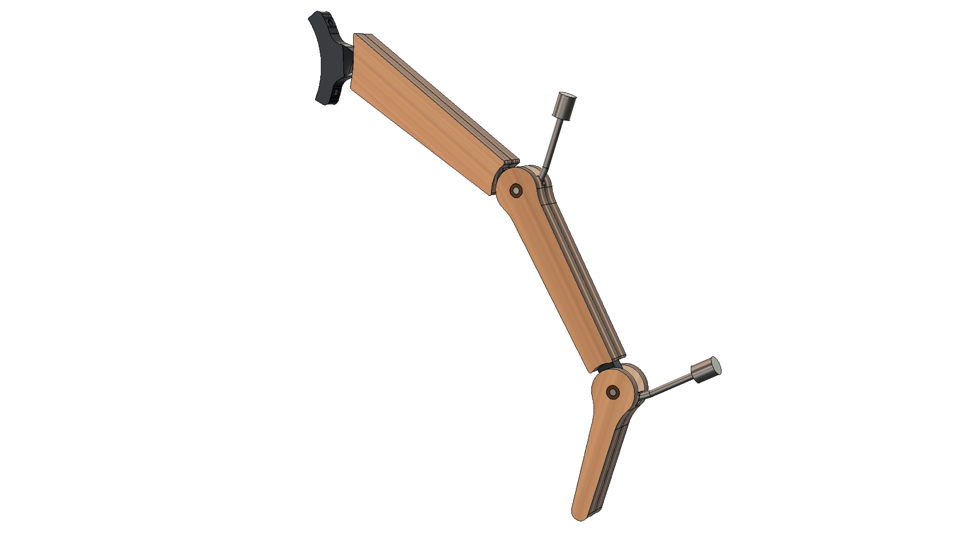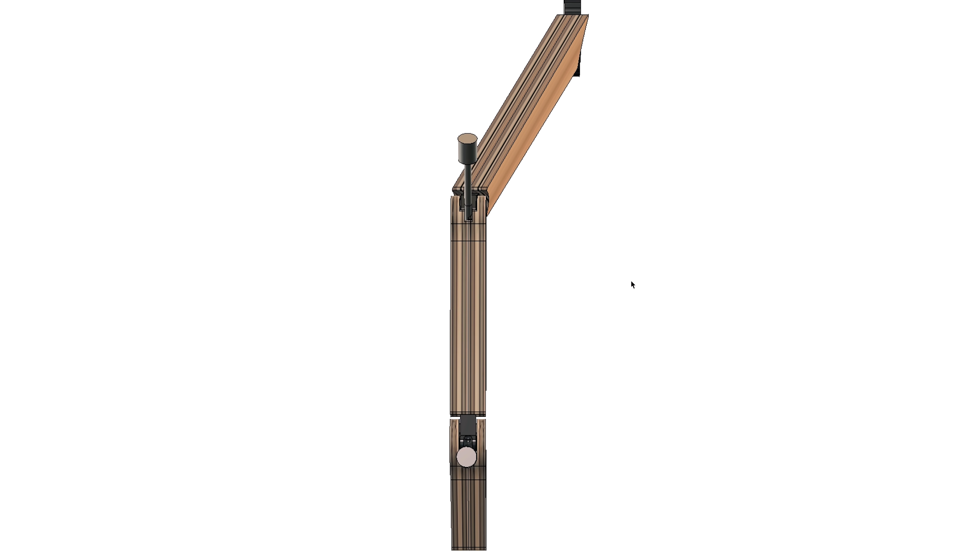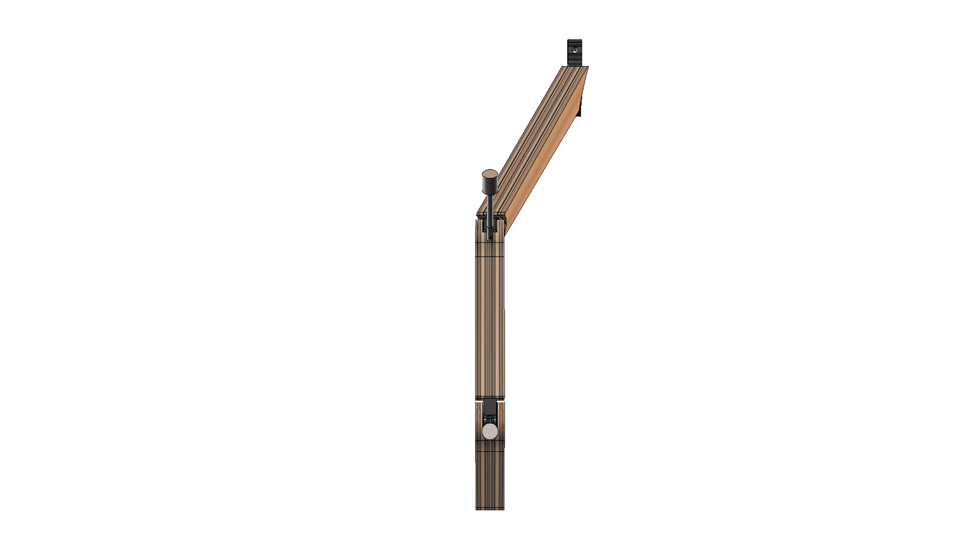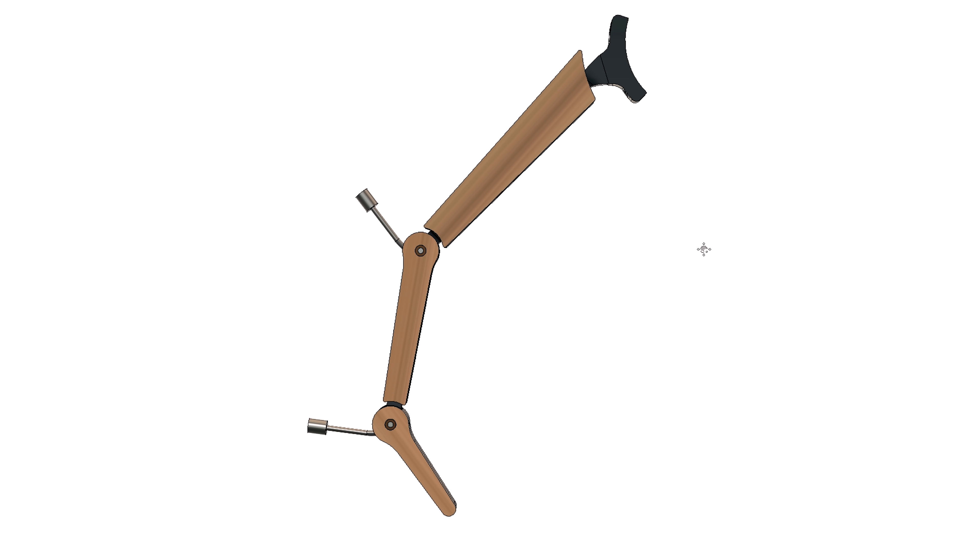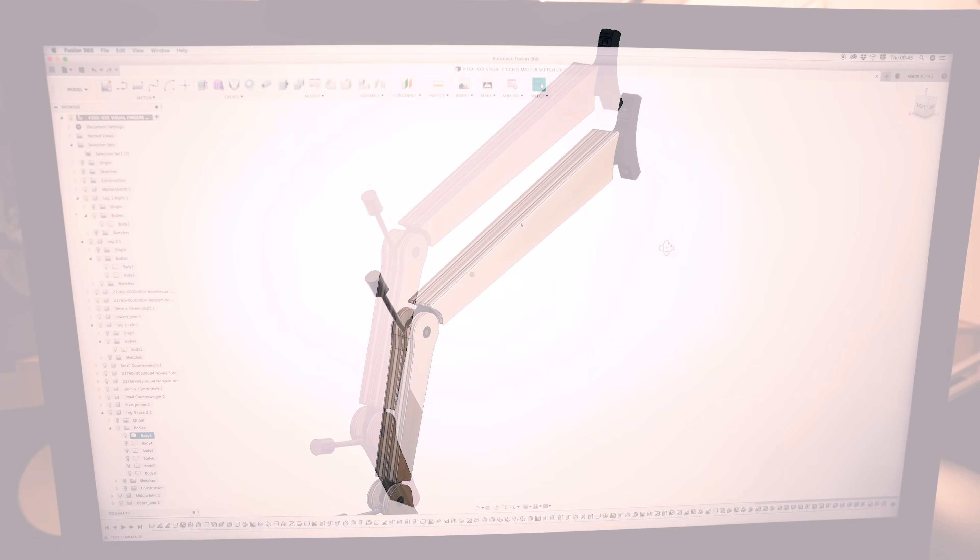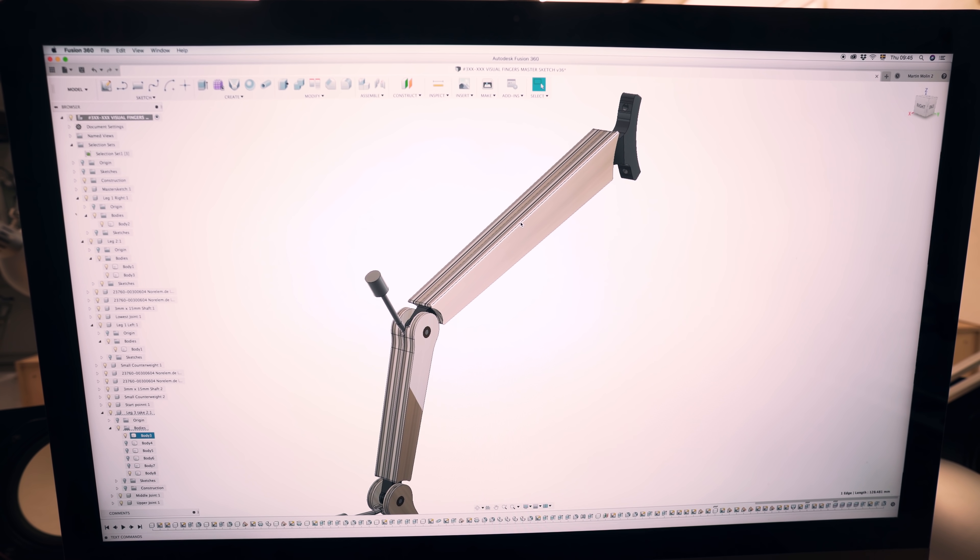If we look at this finger from the front, you can see that there's an angle there. But if we rotate 90 degrees, you can see there's an angle there as well. Which means that this line here is a compound angle.